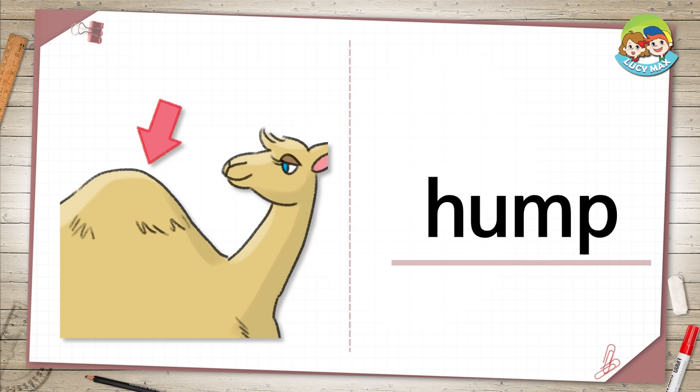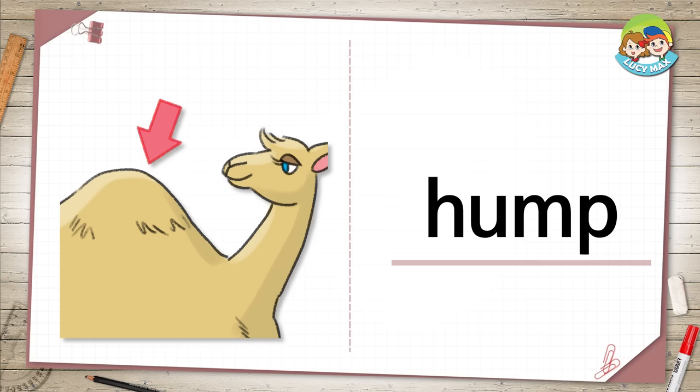Hump. This is a bump on something. The arrow in the picture is pointing to a hump on the camel. What other thing has a hump?